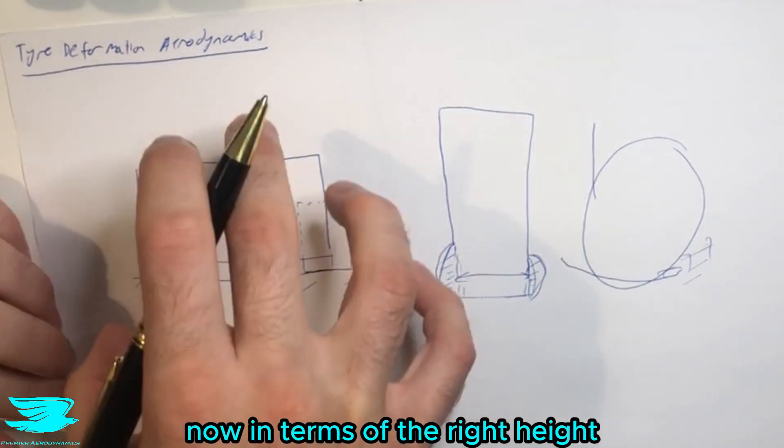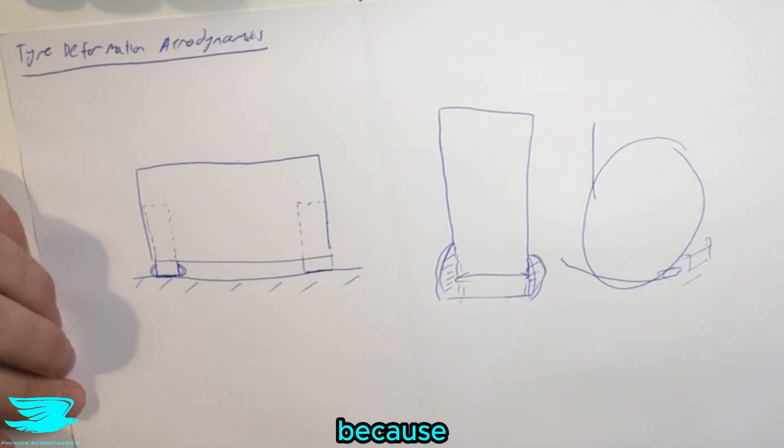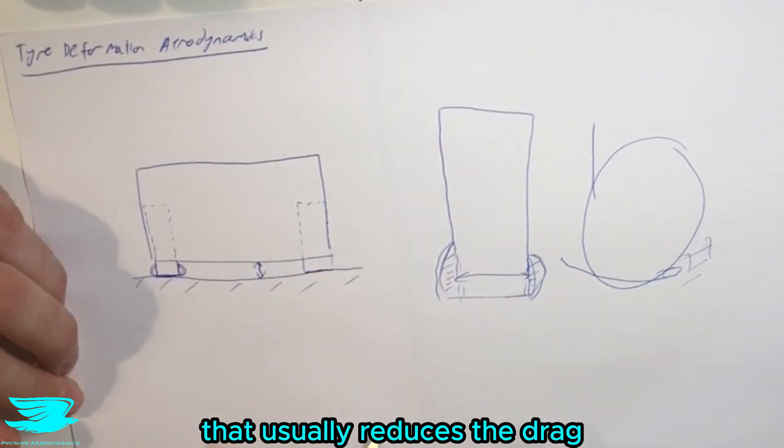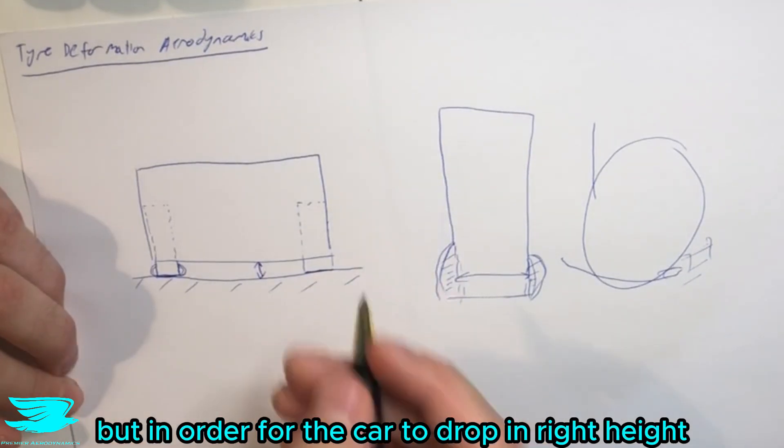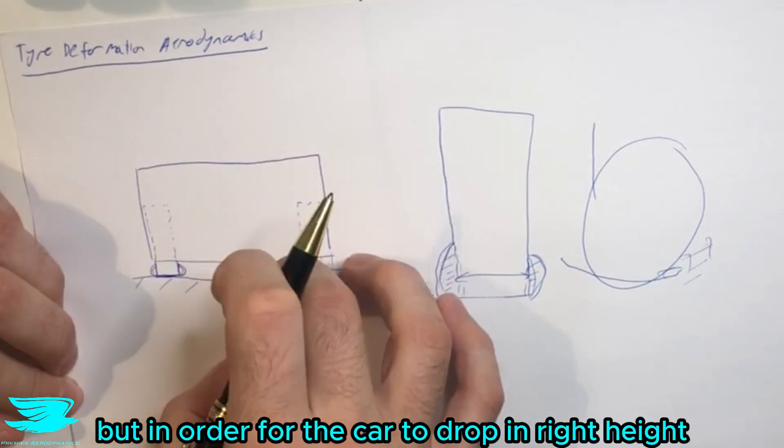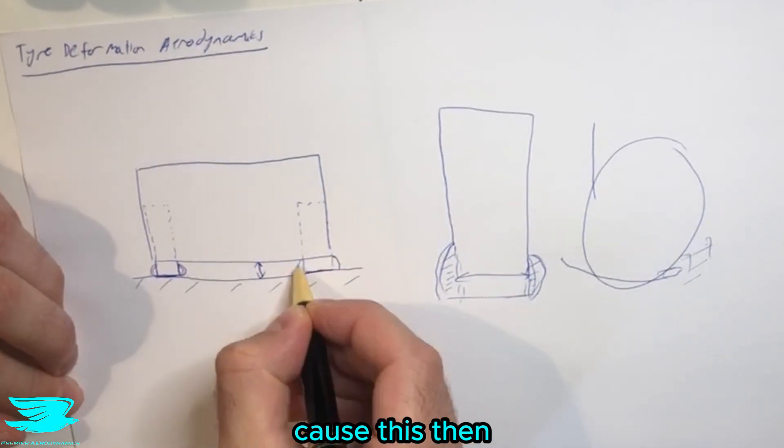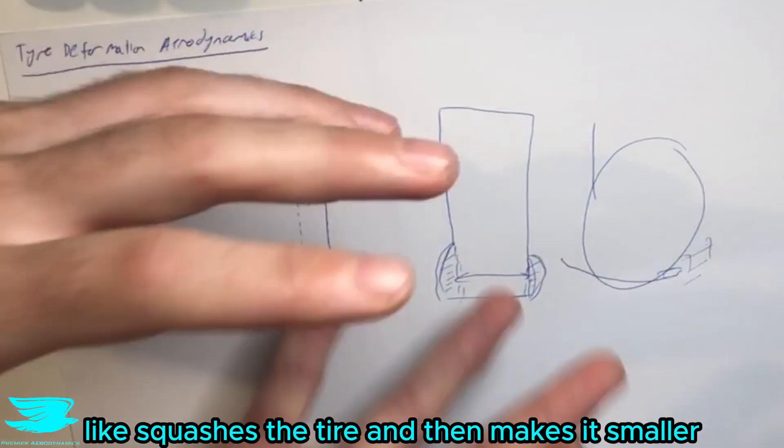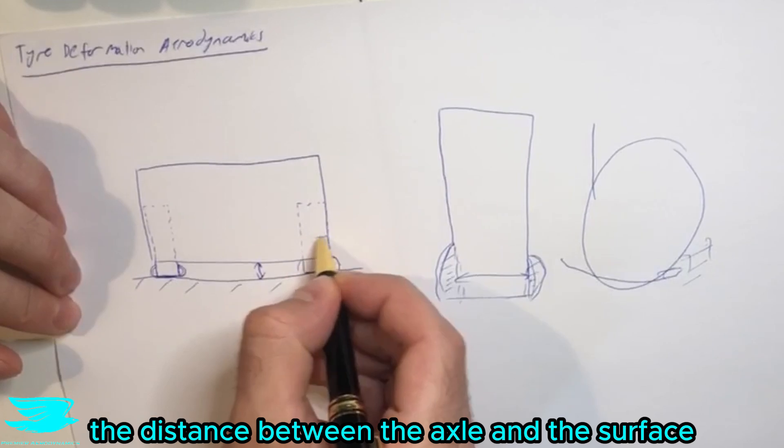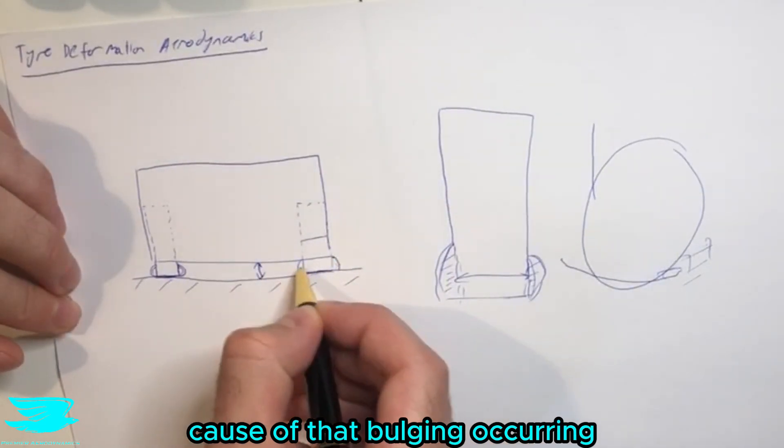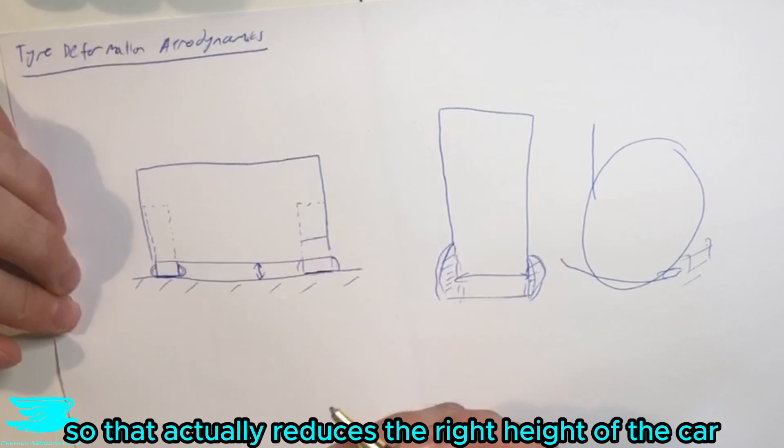Now in terms of the ride height, as I mentioned, it's very interesting because if you were to reduce the ride height of a car, that usually reduces the drag. But in order for the car to drop in ride height with the tire bulge, the tire needs to bulge even more, because this then squashes the tire and then makes it smaller effectively—the distance between the axle and the surface—because of that bulging occurring. So that actually reduces the ride height of the car.